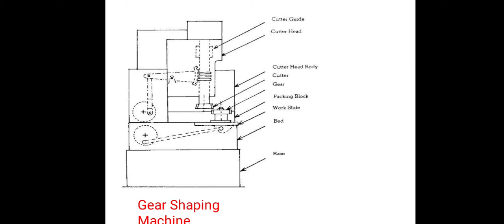The gear shaping machine components include: gear guide at the top, gear head, cutter head body, cutter gear, packing block, work slide, bed dog, and base — upon which the entire machine rests.